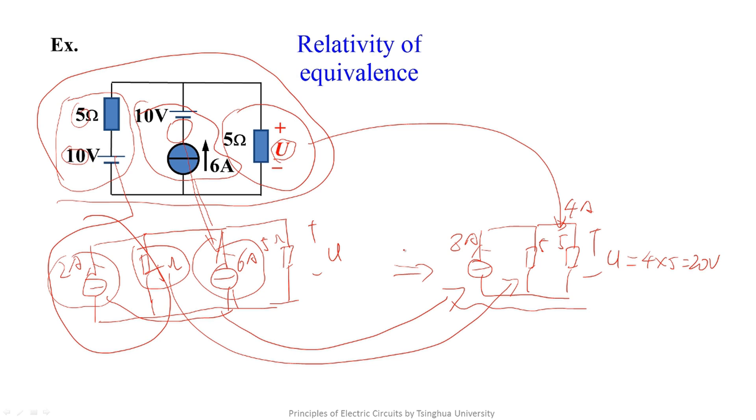The so-called equivalence must be equivalent for the external circuit. For N and N', their UI features are the same as they are equivalent for the external circuit. But for inside, it's not necessary to be equivalent.